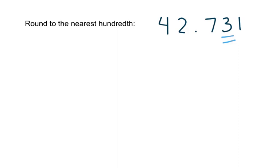The way we decide is by looking one space to the right of where we need to round. If the number in this space is five or higher, we round up. If the number in that spot is four or lower, we round down. In this particular case, we've got a one in that spot, so we're going to round down, and rounded to the nearest hundredth, we're going to have 42.73.